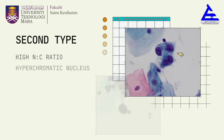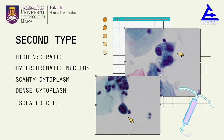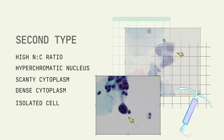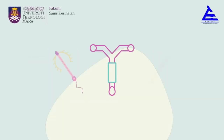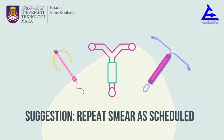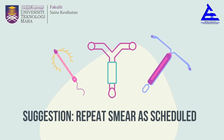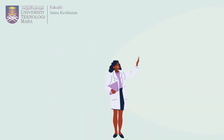For the second type of IUCD, the characteristics are high nucleus-to-cytoplasm (NC) ratio, hyperchromatic nucleus, scanty cytoplasm, dense cytoplasm, and isolated cells. The suggestion for this diagnosis is repeat smear as scheduled.